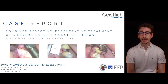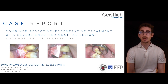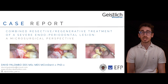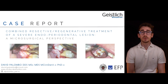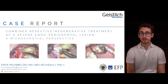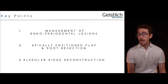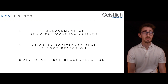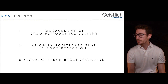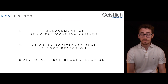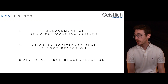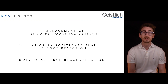Today's lecture covers a case report describing the management of a severe endoperiodontal lesion through a combined resective and regenerative approach performed using the surgical microscope. This case will allow us to revise the overall management of endoperiodontal lesions, the step-by-step surgical technique of an apically positioned flap with resective osseal surgery and root amputation, and the reconstruction of a post-extractive ridge with a bone augmentation procedure.